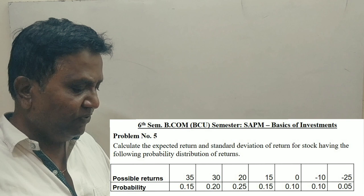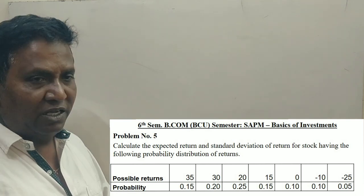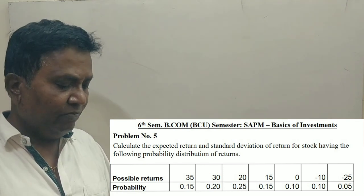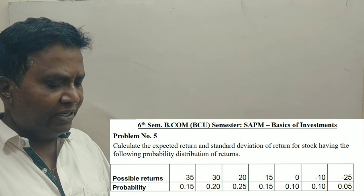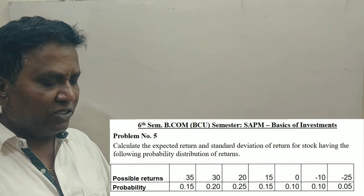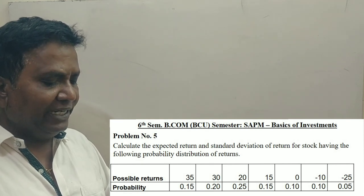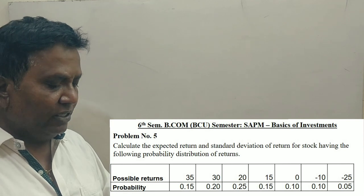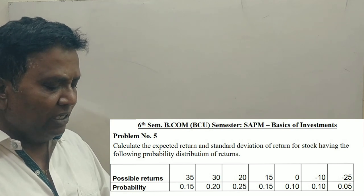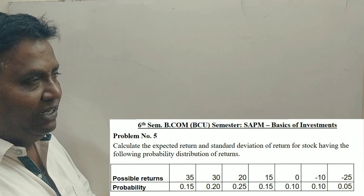Yeah, that is what I will show you. This is for 5 marks actually. It is given in the year 2017. Calculate expected return and standard deviation of return for stock having following probability distribution of returns. So possible returns and probability, both is given.